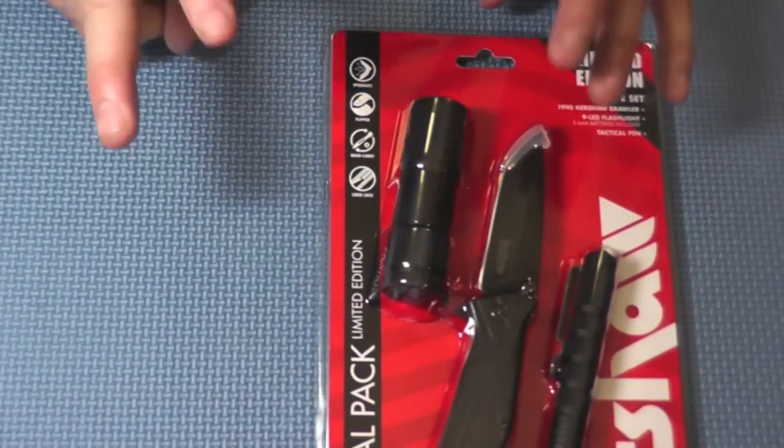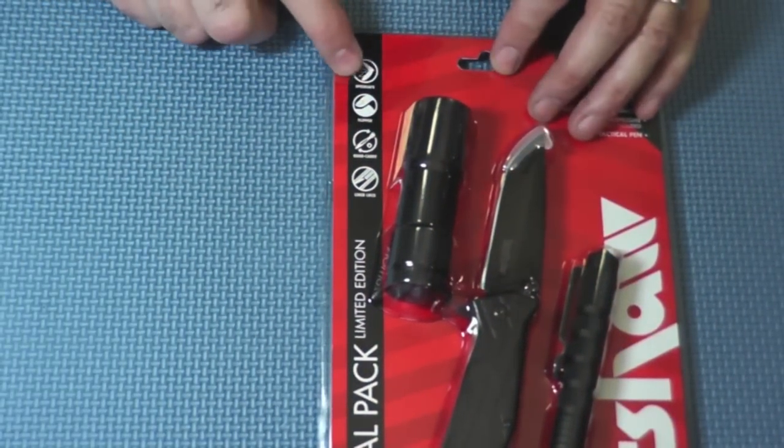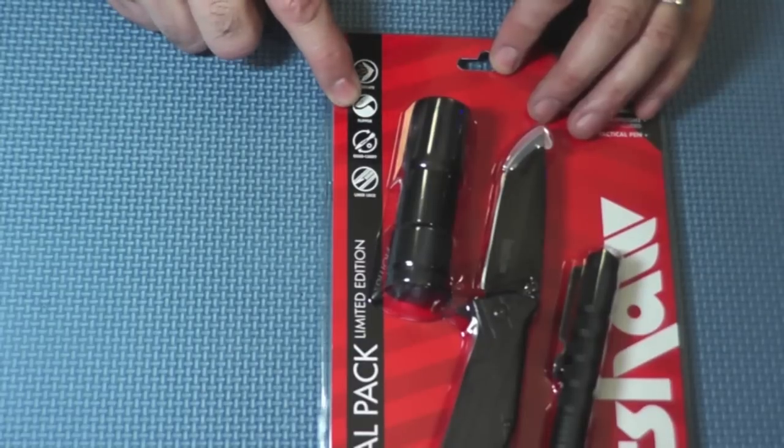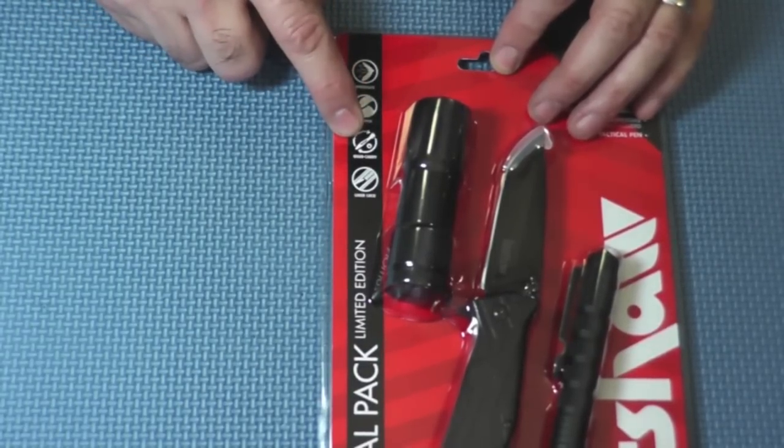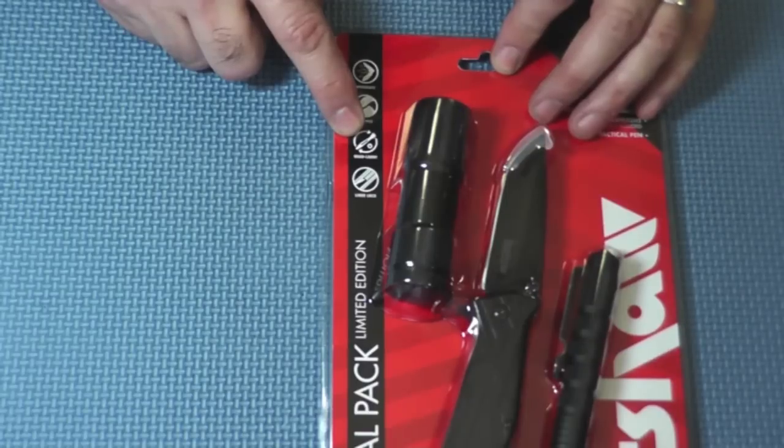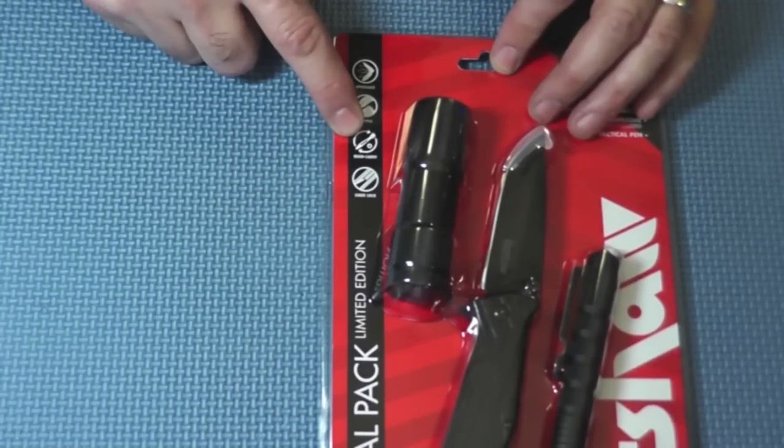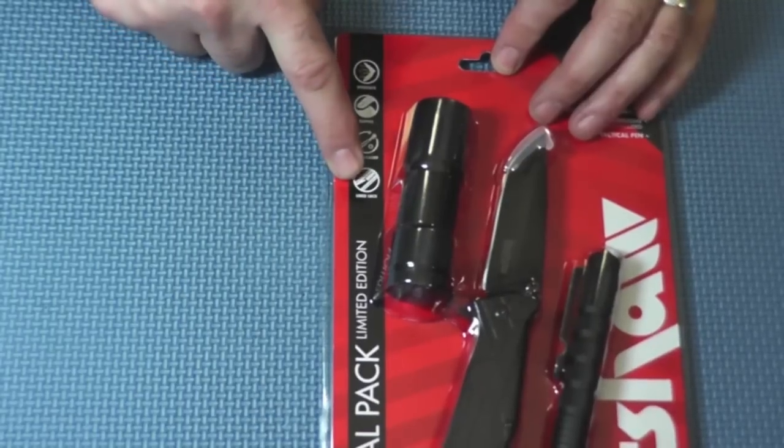It's a flipper, which we'll show off here. It's quad carry, which means that the clip can be mounted at all four points. So, it's left to right carry blade or tip up or tip down. And it is a liner lock.